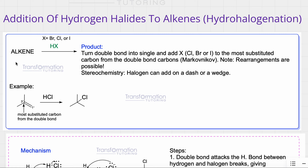In this reaction, our starting material must be an alkene — a molecule that has a C double bond C. Our reagent is HX, where X could be bromine, chlorine, or iodine, so a reagent could be HCl, HBr, or HI.